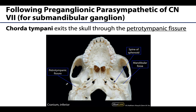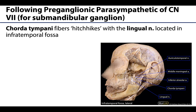The chorda tympani makes its way through the middle ear and eventually exits the cranium via the petrotympanic fissure. The petrotympanic fissure can be tricky to see — locate the mandibular fossa and it is the long slit-like fissure just posterior to it. Once the chorda tympani exits through the skull via the petrotympanic fissure, it will be in the infratemporal fossa, which is a region deep to the masseter muscle in the deeper portions of the face. It travels within the infratemporal fossa before joining up with the lingual nerve.